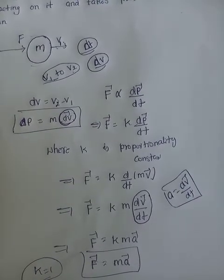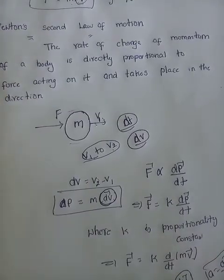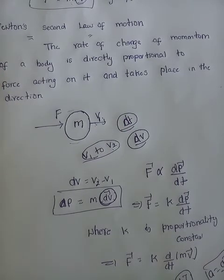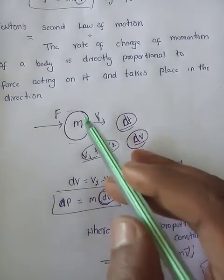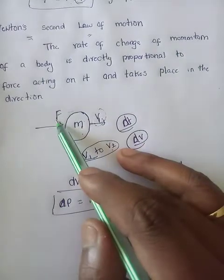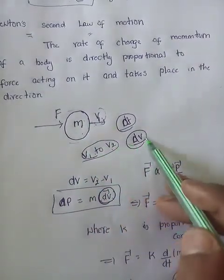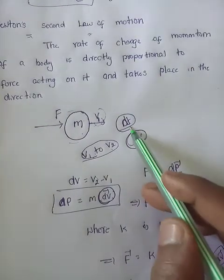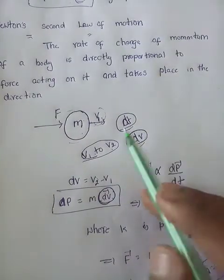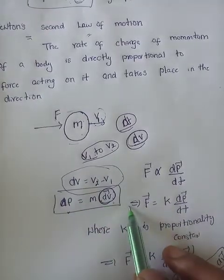Newton's second law of motion states: the rate of change of momentum of a body is directly proportional to the force acting on it and that change in momentum takes place along the direction of applied force. For a body of mass m with initial velocity v1, when force is applied its velocity changes from v1 to v2. The change in velocity is dv in time interval dt. Since momentum depends upon velocity, change in momentum equals m times dv.